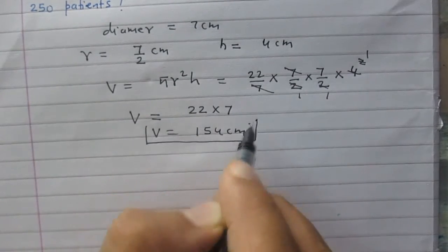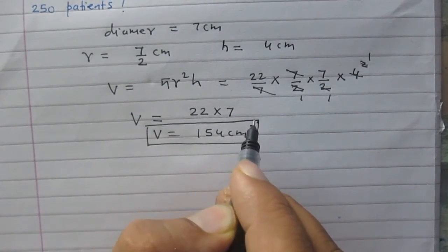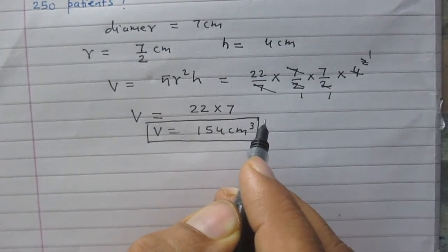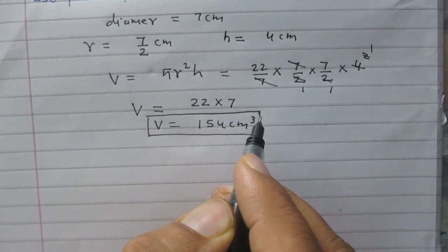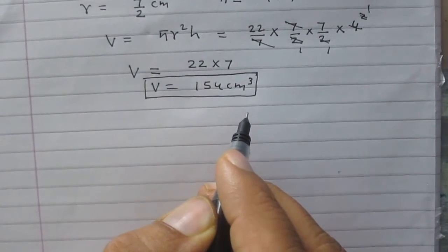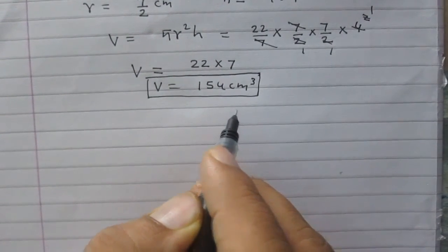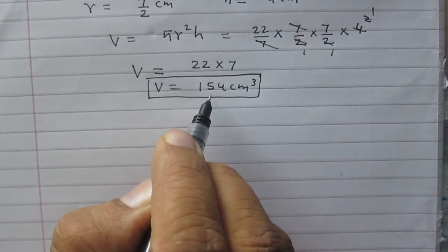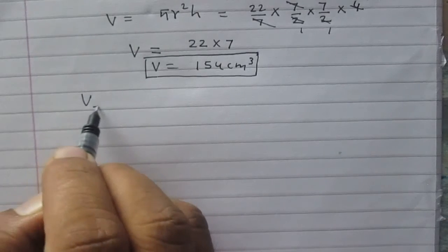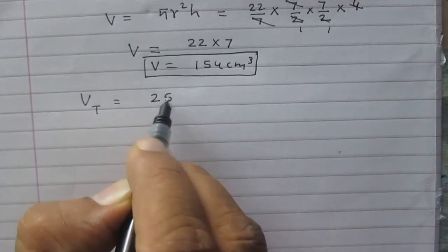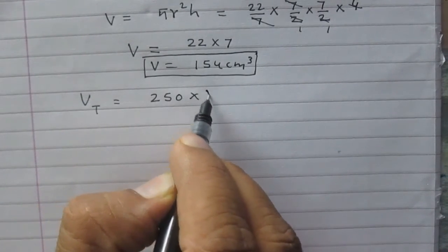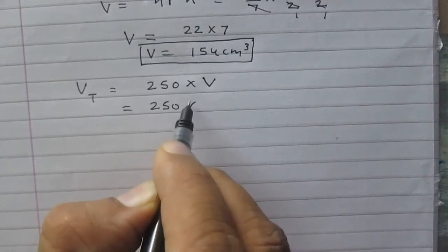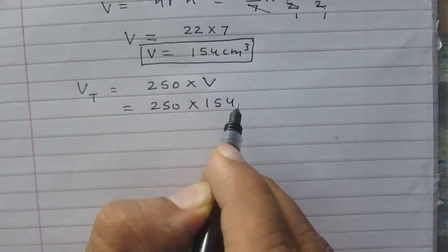Since the hospital is preparing soup for 250 patients and we are to calculate the total volume of soup prepared, we will have to multiply the volume of soup in a single bowl by 250. So the total volume is 250 multiplied by 154.